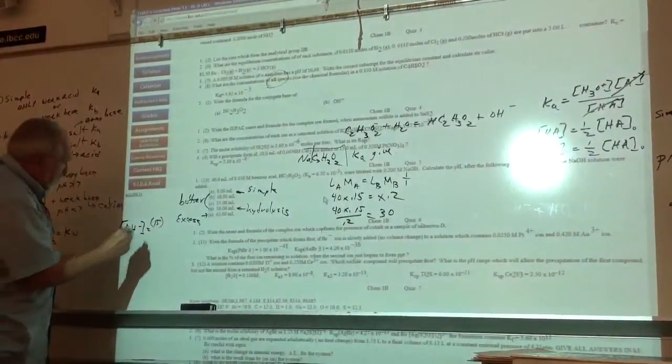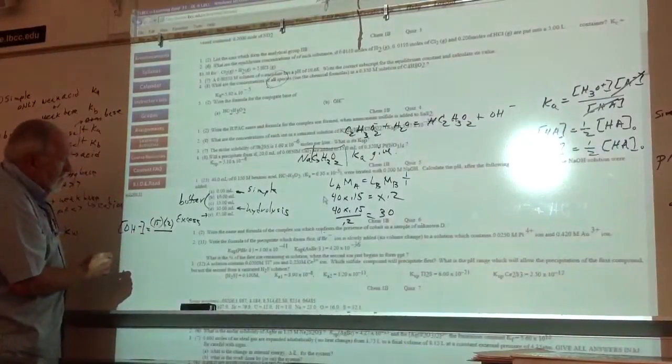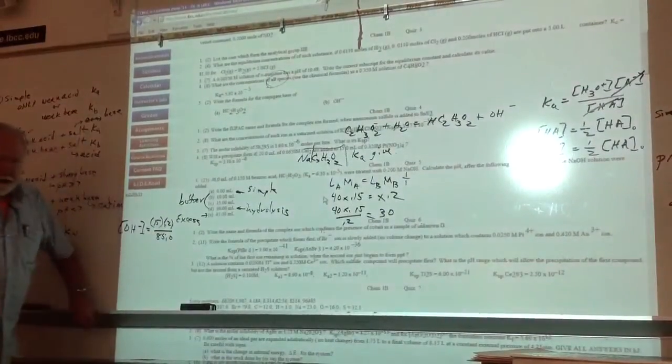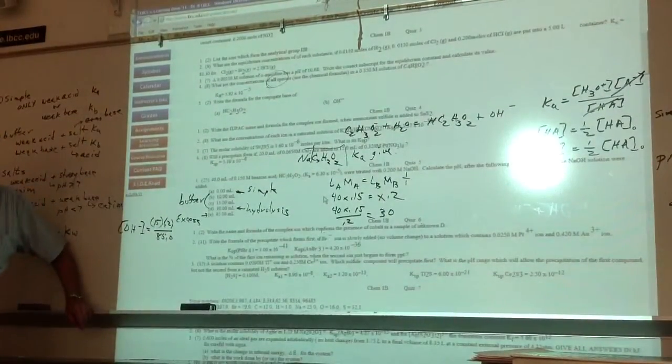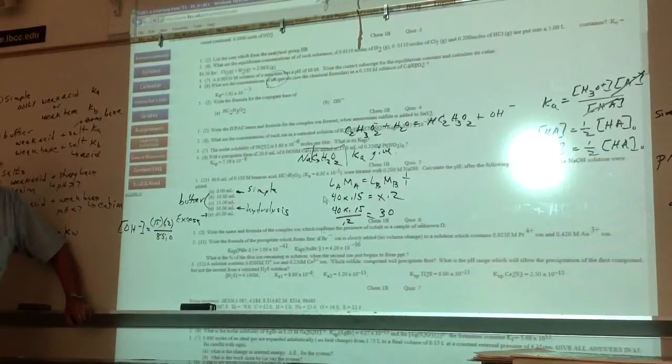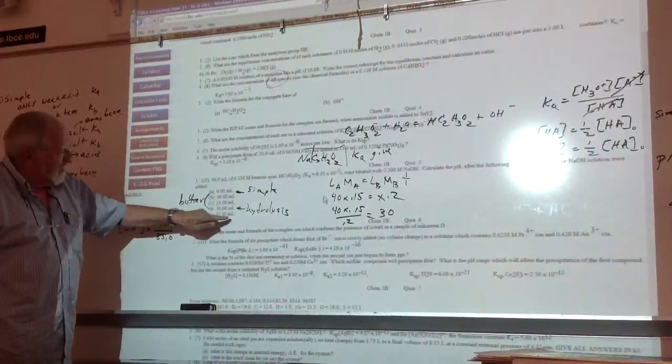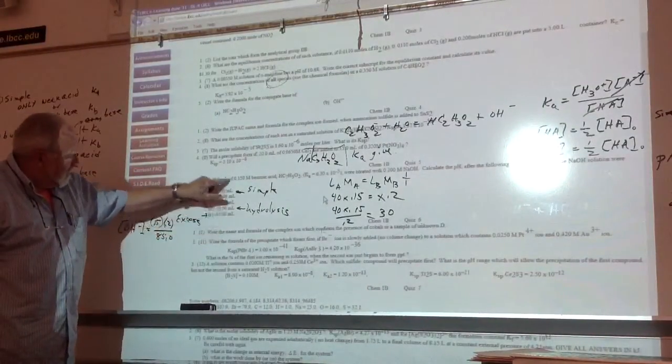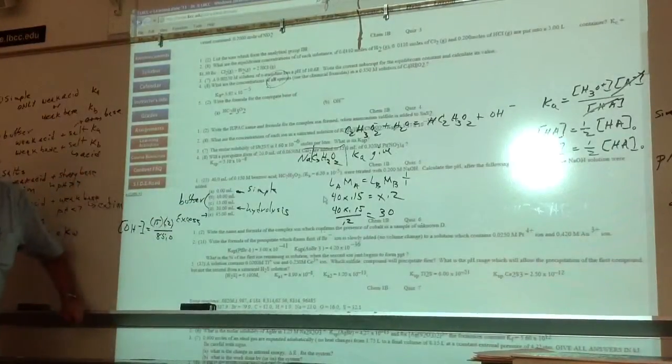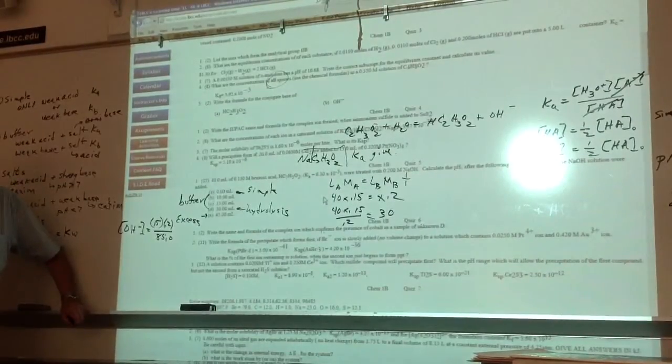The concentration is 0.2 over the total volume, which is 45 plus 40. And once you know the OH, you can get the pH, the pOH, and then the pH. Or you can do 40 times 0.15 minus 45 times, because this will be the limiting reagent now once you pass the equivalence point. And you calculate the same excess moles, moles of hydroxide.